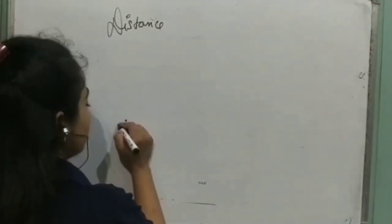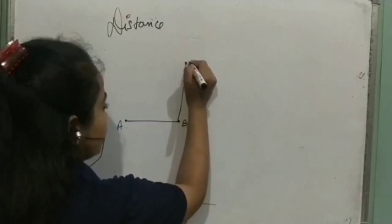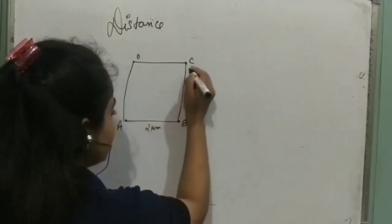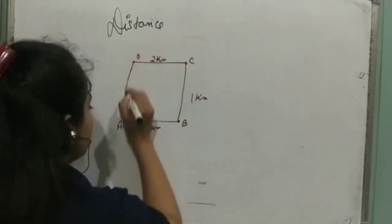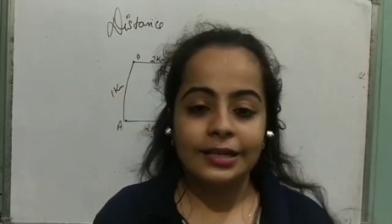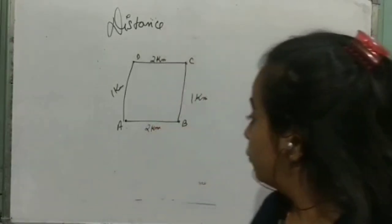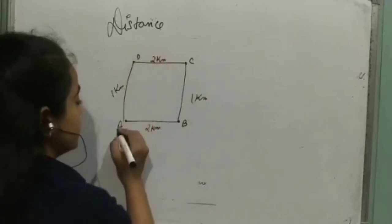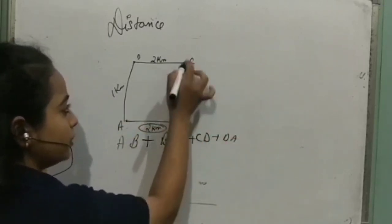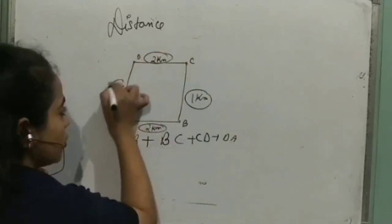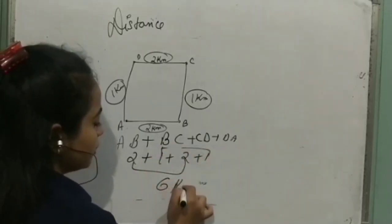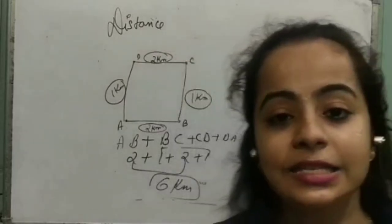Let's take an example. Suppose I am standing at point A, I move to B, then to C, then to D, and from D back to A. From A to B I covered 2 km, B to C I covered 1 km, C to D I covered 2 km, and D to A I covered 1 km. For distance, you take the entire actual length: AB plus BC plus CD plus DA equals 2 plus 1 plus 2 plus 1 equals 6 km. So the distance of my entire journey is 6 km.